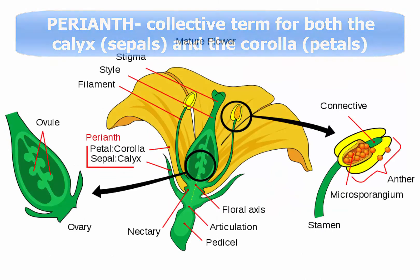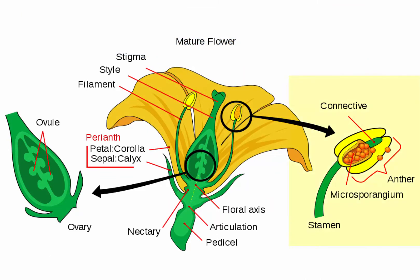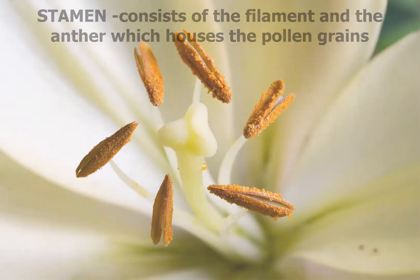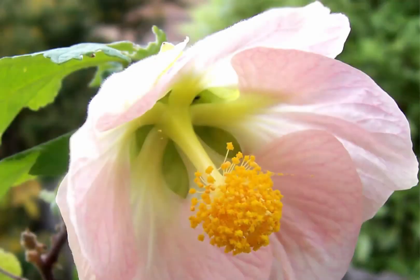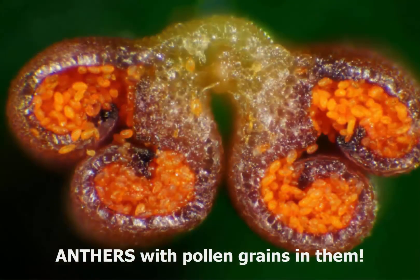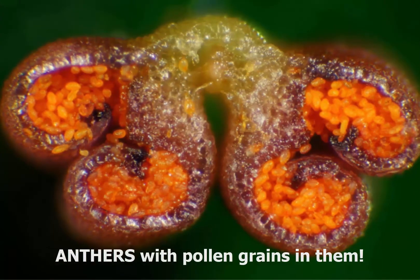We have examined the non-reproductive structures. Let's now go to the male and female parts. Several to many stamens are attached to the receptacle around the base of the pistil in the center of the flower. I tell my students that they should remember the 'men' in stamens to recognize it as the male component of the flower. Each stamen consists of a slender filament with a sac called an anther at the top that contains the pollen grains.